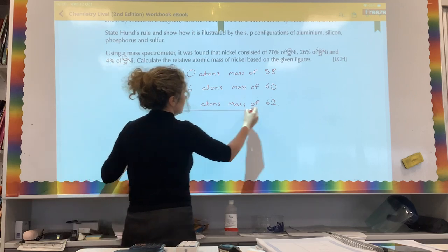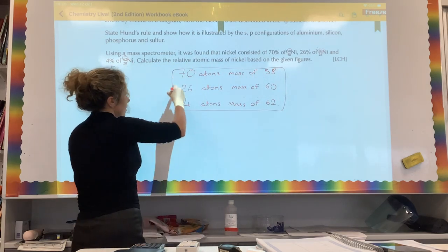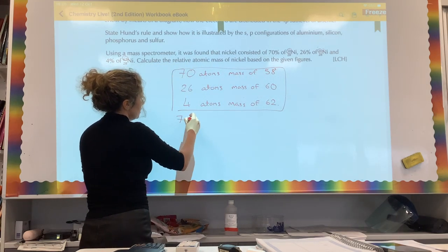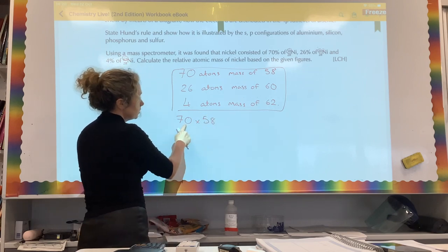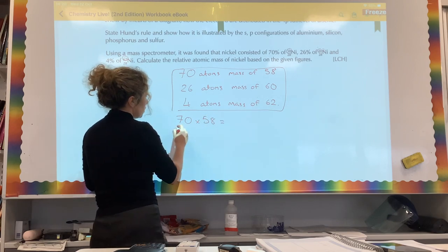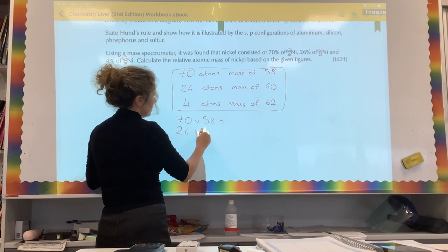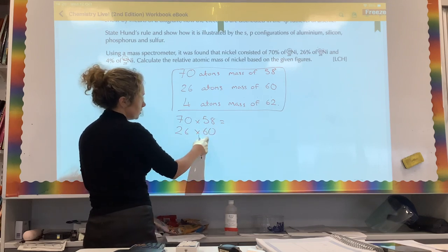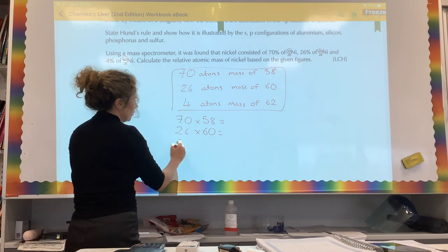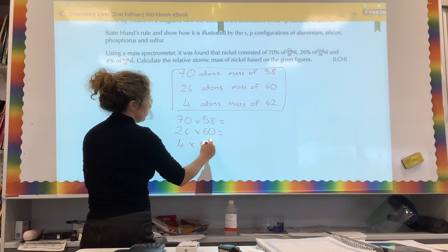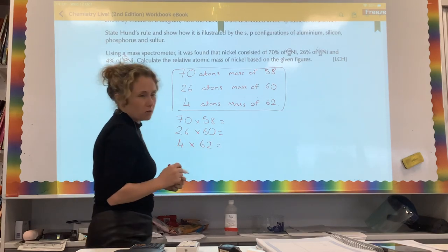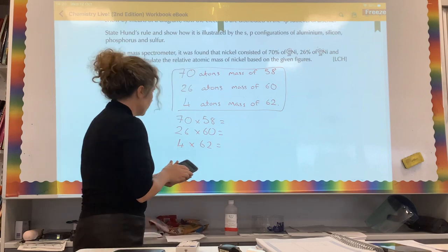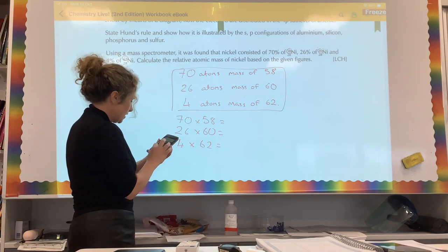There's our information that we need for our question. It's going to be 70 by 58, that's the abundance by the mass. It's going to be 26 by 60, again your percentage abundance by the mass. And then finally, your 4 by 62. So we're going to put that into our calculators now.